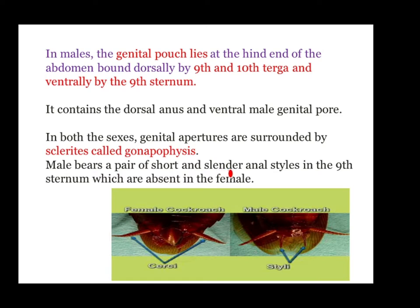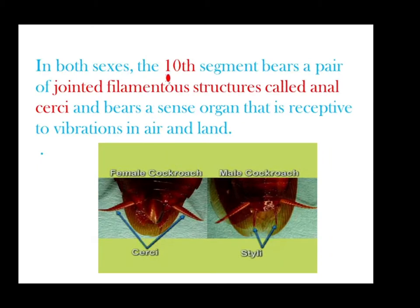Males bear a pair of short and slender anal styles on the ninth sternum, which are absent in females. The anal cerci are present in both male and female. The tenth segment bears a pair of jointed filamentous structures called anal cerci, which bear sense organs receptive to vibrations in air and land.